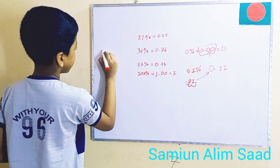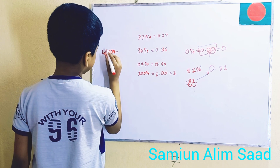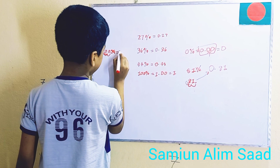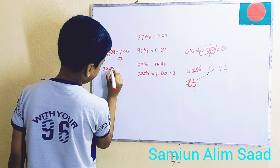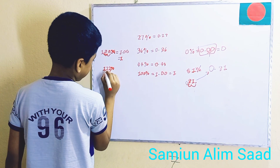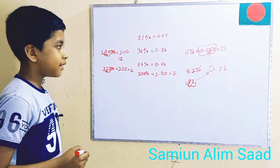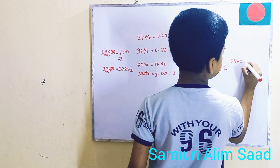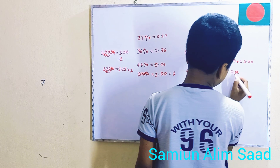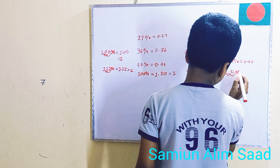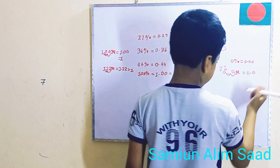Let's try 100%. We cross out the symbol, and move the decimal point two places to the left. And we get 1.00. Let's do another one — an improper fraction. 122%: cross that out, move the decimal two places to the left, and we have 1.22, which is greater than 1. And for 0%: cross out the percent, move the point, and you get 0.0 — which is just 0.